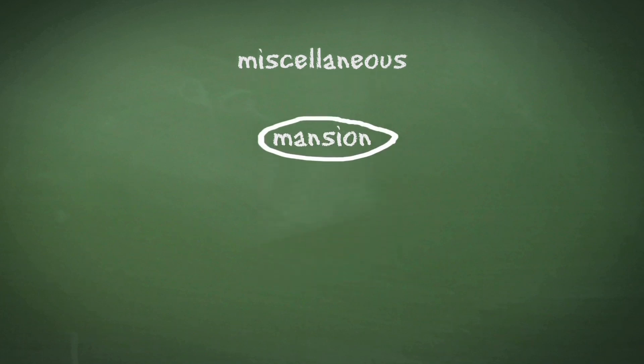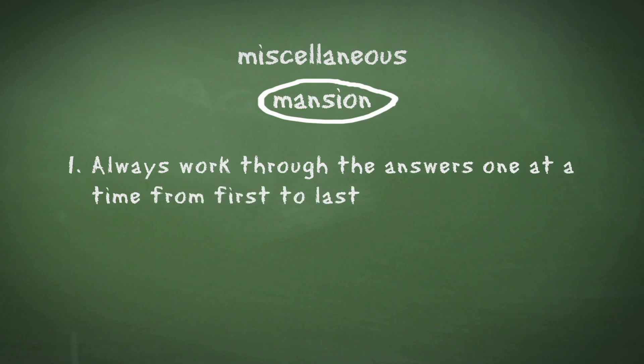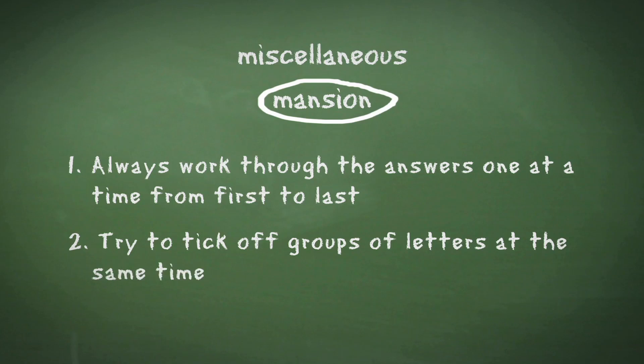There are three key things to remember. First, always work through the answers one at a time from first to last. This ensures you go through all of them without missing the correct answer. Second, try to tick off groups of letters at the same time rather than individually. Third, beware of double letters. Examiners love putting these in to try and trip you up.